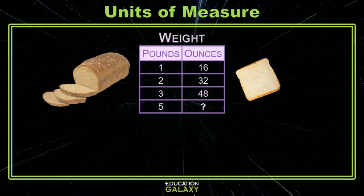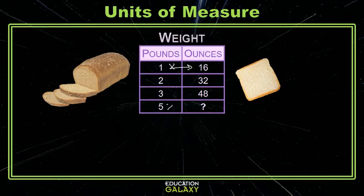Here we have pounds and ounces. A piece of bread is about an ounce and a loaf of bread is about a pound, so the pound is the bigger unit of measure. To get from that bigger unit to the smaller one, we multiply. We are given that one pound equals 16 ounces, which tells us we can multiply by 16. So 16 times 5 tells us that 80 ounces are in 5 pounds.